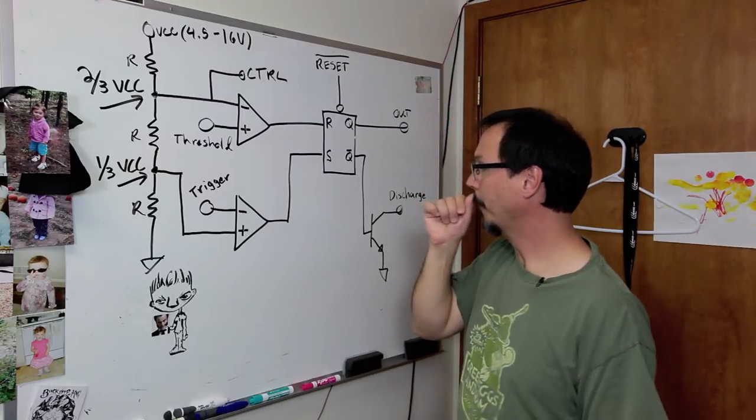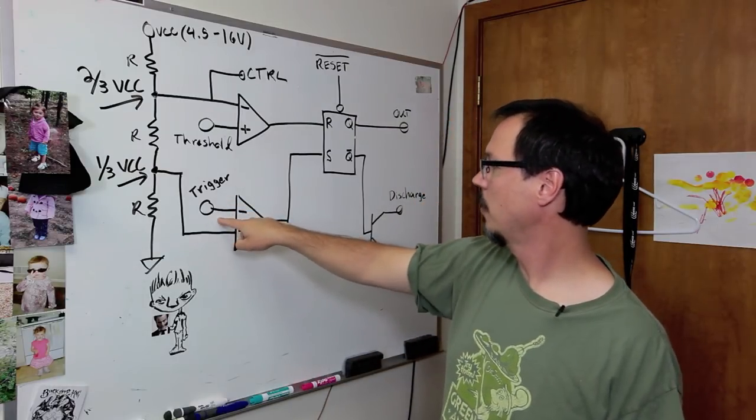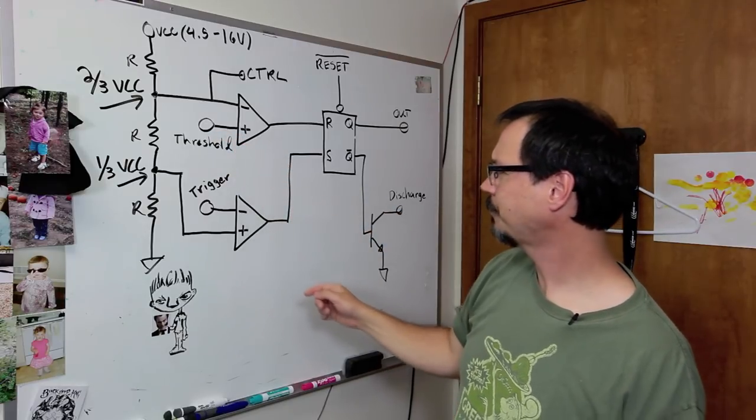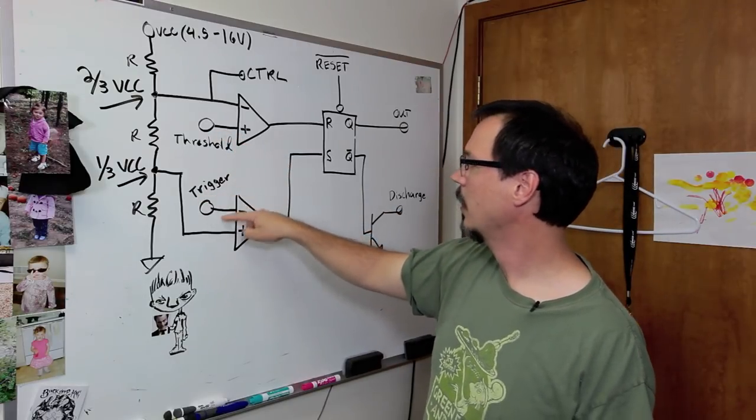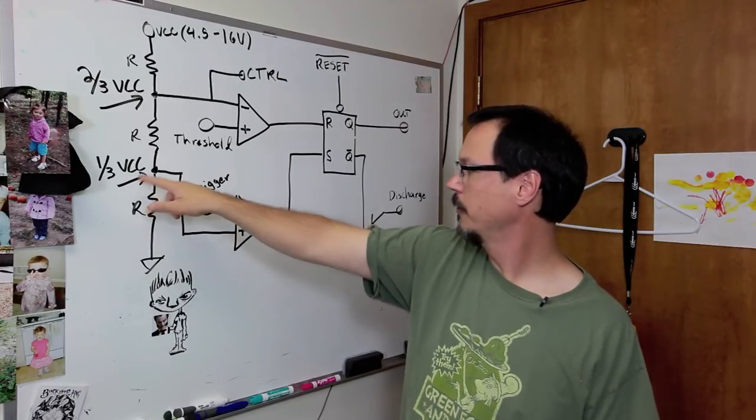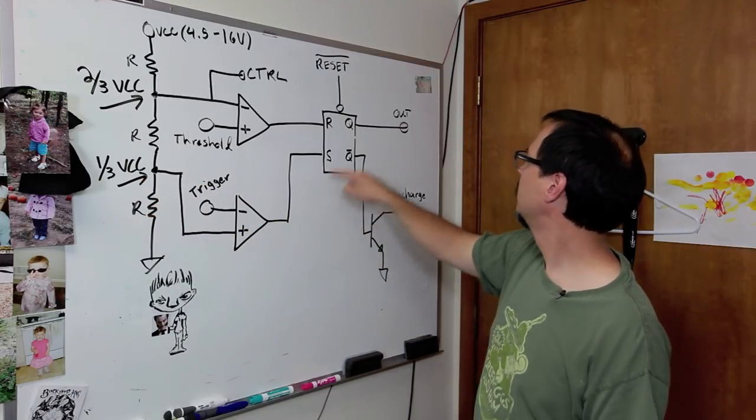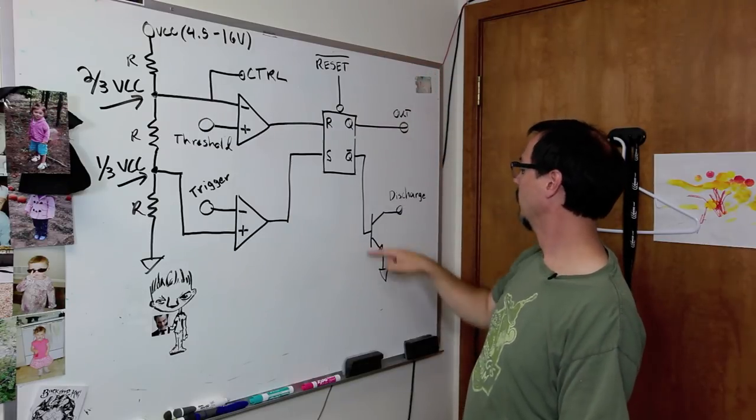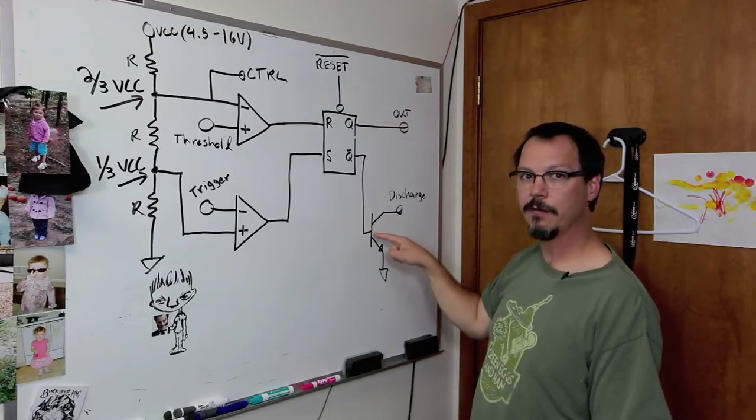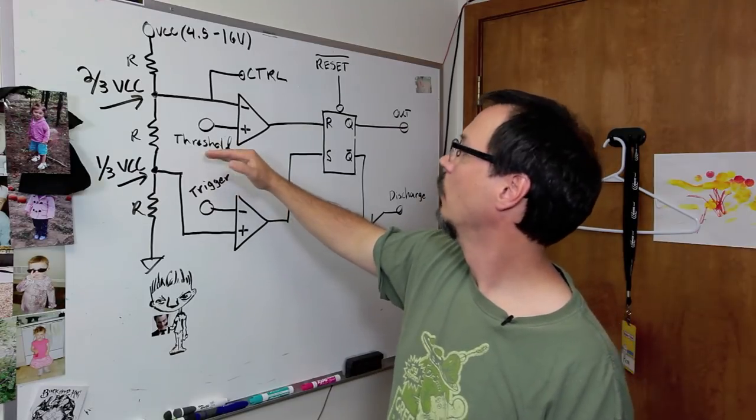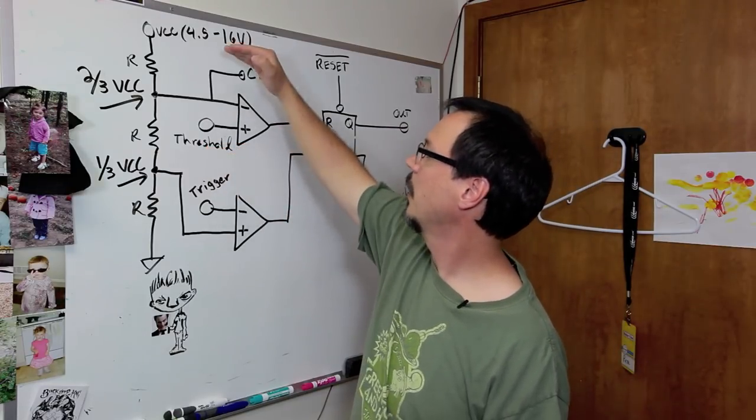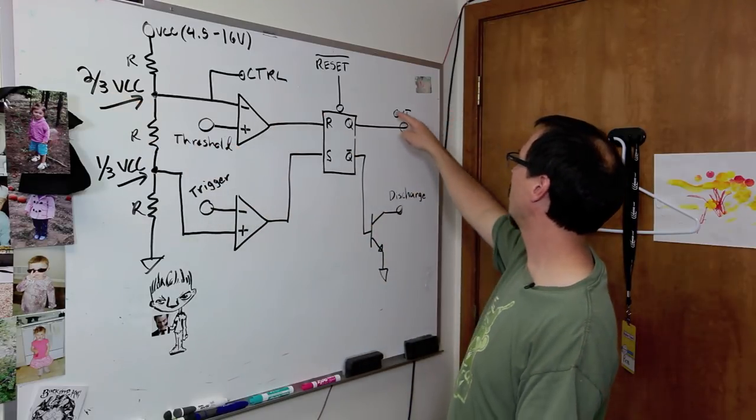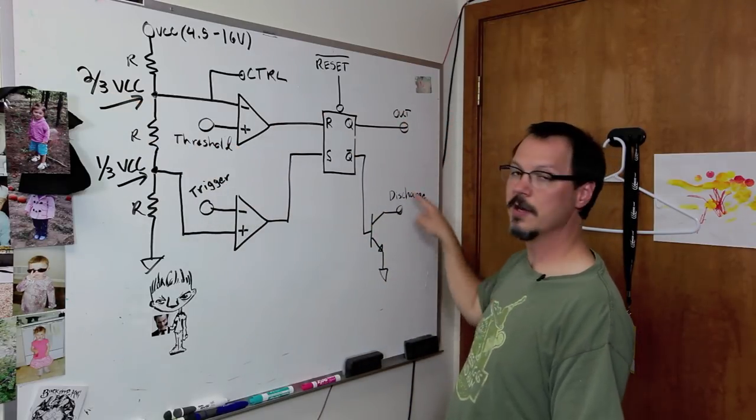Okay? Simple enough. Now, there are two pins here. One is called trigger. One is called threshold. In general, when trigger is pulled low, lower than 1/3 VCC, it sets the output high. Okay? Output's high. Discharge transistor is off. Okay? Threshold. When the threshold pin is taken higher than 2/3 VCC, this is all reset. Output goes low. Discharge transistor turns on.